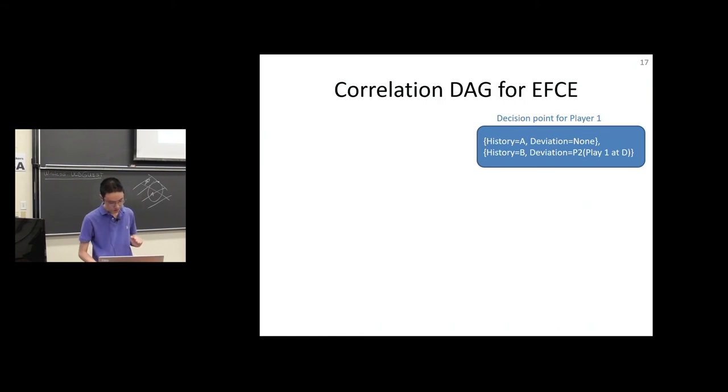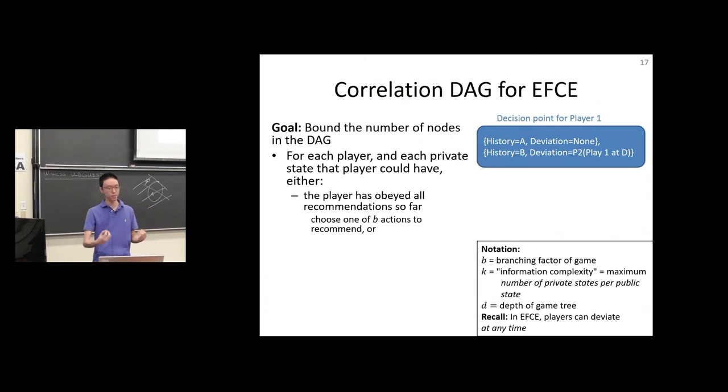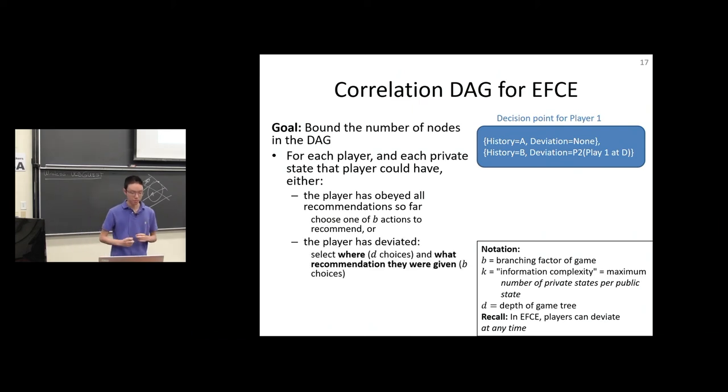Our goal is to bound the size of this state. For each player and each private state that player could have, either that player has obeyed all the recommendations so far, in which case we have to choose one of the B actions to recommend, or the player has deviated. If the player has deviated, we have to select where that player has deviated and what recommendation that player was given to cause it to deviate. So in each private state, there are roughly BD choices. In other words, we have a BD to the k bound on size. I'm intentionally being fuzzy here, hiding polynomial factors. For extensive form correlated equilibrium, the exponential term we get is this BD to the k.